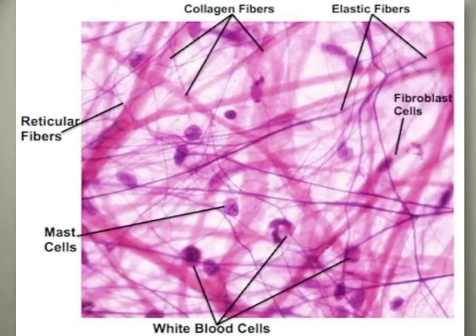This is the diagram showing different connective tissue components. You can see collagen fibers, reticular fibers, elastic fibers, fibroblasts, mast cells, and white blood cells — these are all components of connective tissue, and you can see them all in one slide.